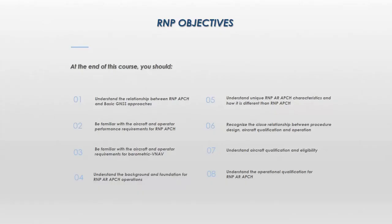RNP course objectives: At the end of this course, you should understand the relationship between RNP approach and basic GNSS approaches; be familiar with the aircraft and operator performance requirements for RNP approach; be familiar with the aircraft and operator requirements for barometric VNAV; understand the background and foundation for RNP approach operations; understand unique RNP AR characteristics and how it differs from RNP approach; recognize the close relationship between procedure design, aircraft qualification, and operation; and understand aircraft qualification, eligibility, and operational qualification for RNP approach.